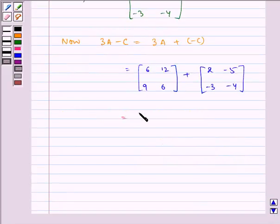Which equals 6 plus 2 is 8, 12 minus 5 is 7, 9 minus 3 is 6, 6 minus 4 is 2.